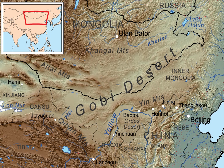The Gobi Desert is expanding at an alarming rate, in a process known as desertification. The expansion is particularly rapid on the southern edge into China, which has seen 3,600 square kilometres of grassland overtaken every year by the Gobi Desert. Dust storms, which used to occur regularly in China, have increased in frequency in the past 20 years, mainly due to desertification.